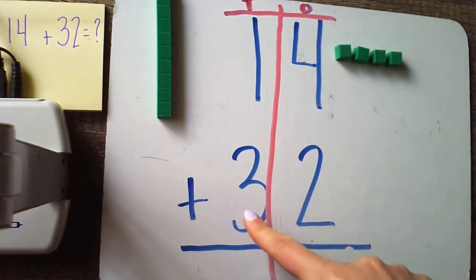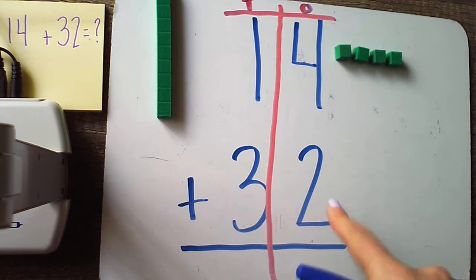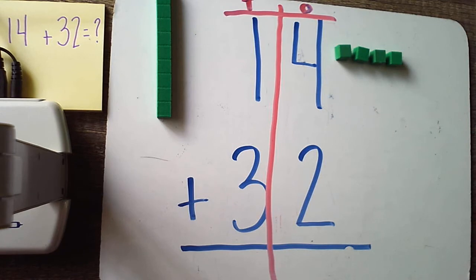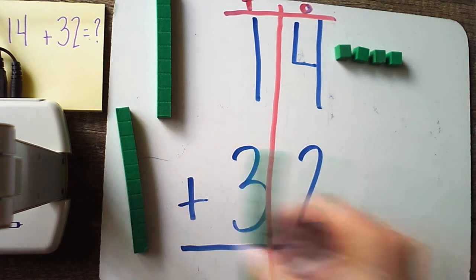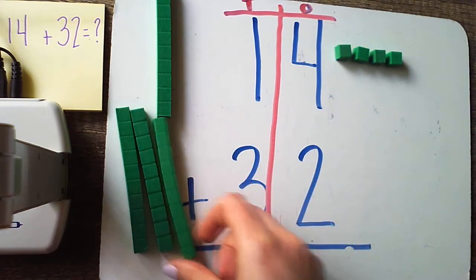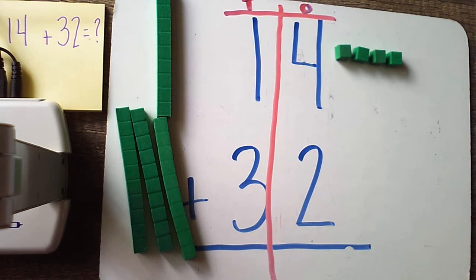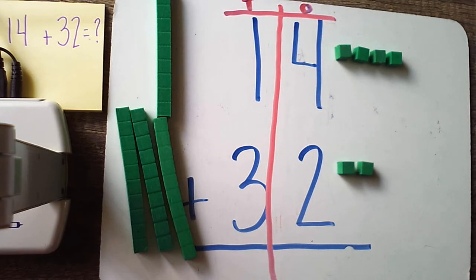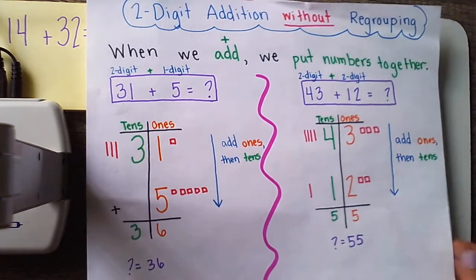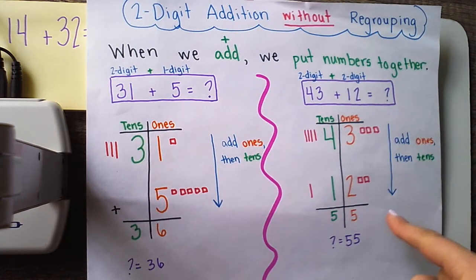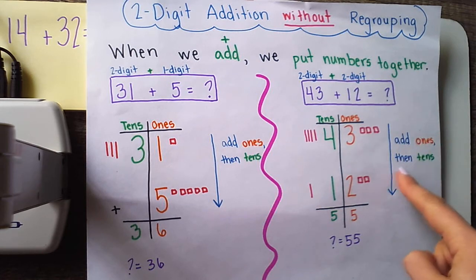I'm now gonna move down to my next add-in, which is 32, and I'm gonna represent that with my objects as well. Using what I know about place value, I know that 32 is made up of three tens — one, two, three — and two leftover ones — one, two. Now that I've set up my objects, I'm ready to add or put this all together. The easiest way to do that, let's go back to our chart, is by moving down and adding your ones then your tens.